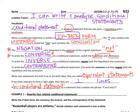To write the inverse of a conditional statement, we need to negate both the hypothesis, which is the if part, and the conclusion. Negating just means that we're writing the word not in each part: if this not, then that not. So we'll be practicing that as well.